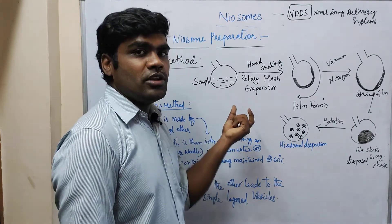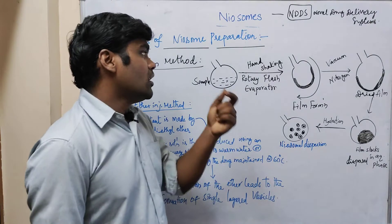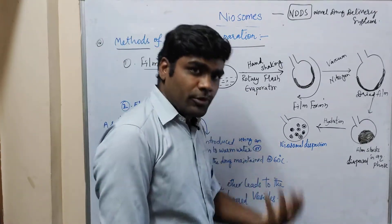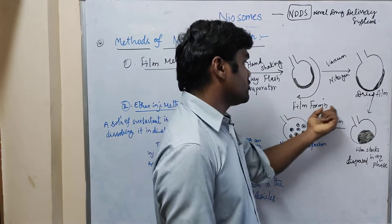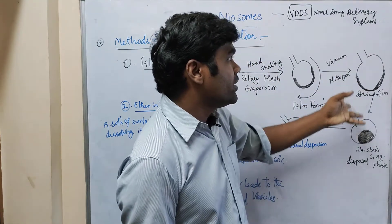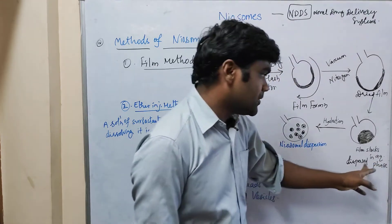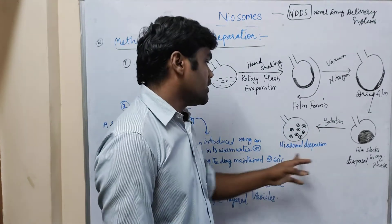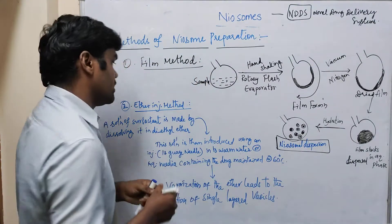So these are the various steps for getting a neosomal dispersion. First, we take the sample — the drug or pharmaceutical formulation. Then handshaking and use of the rotary flash evaporator gives evaporation. This leads to film formation in the round bottom flask. We introduce a nitrogen vacuum, the dried film forms, and it stacks in the aqueous dispersity phase. Finally, by hydration, we get the neosomal dispersion, which gives us target drug delivery.